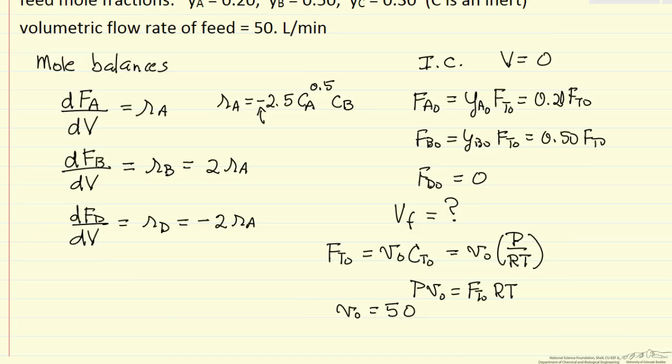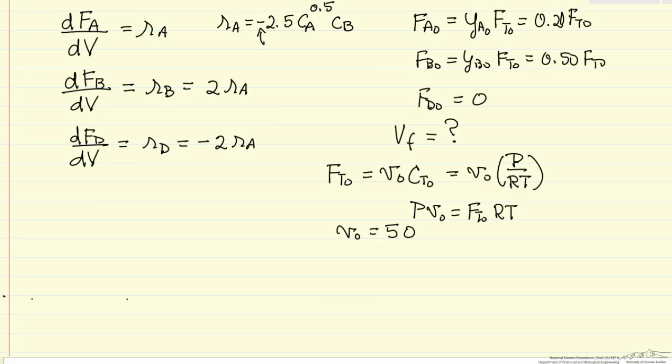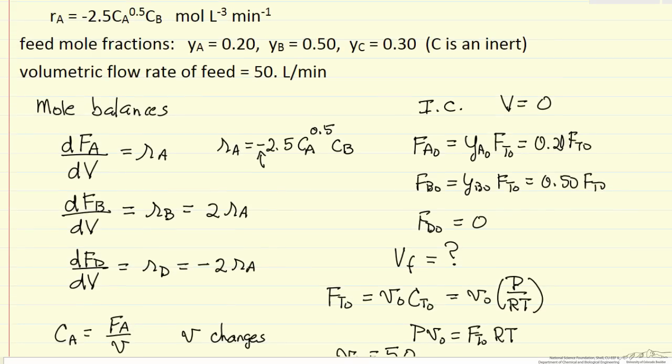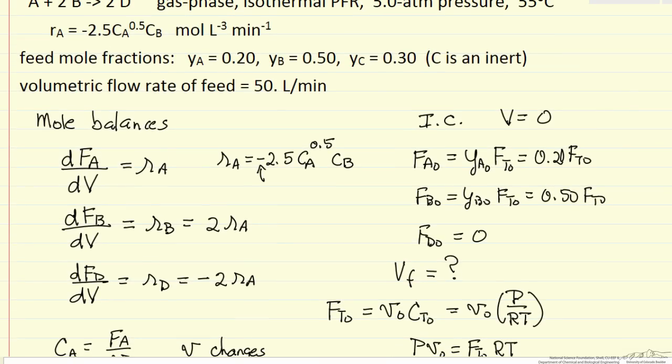Now to make these equations complete, in order to be able to solve them, we need the concentration of A and the concentration of B. The concentration of A can be written as the molar flow rate of A over the volumetric flow rate. What's important to keep in mind is that the volumetric flow rate changes for this system because we have 3 moles reacting to 2 moles.